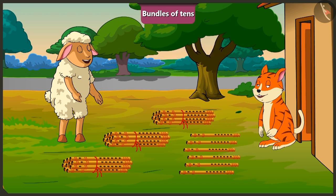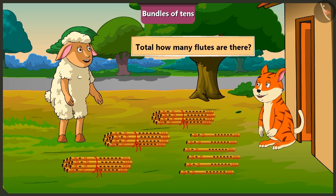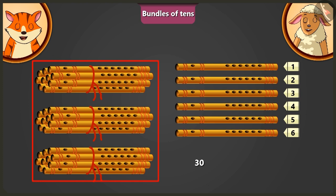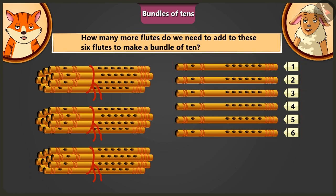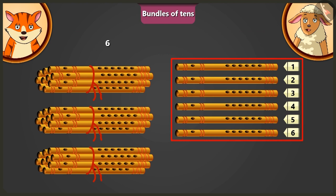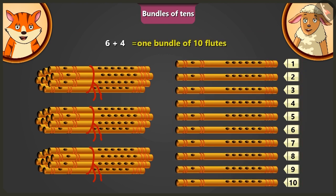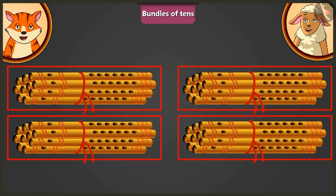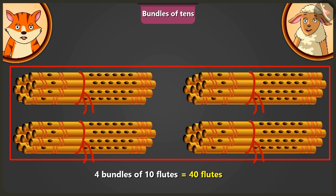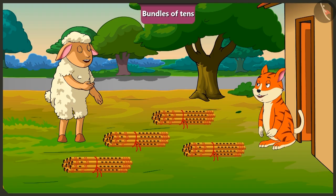Billy, now tell me how many flutes are there in all? There are 30 and 6 — total 36 flutes. Come, Lily, now tell me: adding how many flutes to these 6 flutes will make 1 bundle of 10? Adding 4 flutes to 6 flutes will make 1 bundle of 10 flutes. Yes, now here we have 4 bundles of 10 flutes each, that means there are total 40 flutes. Well done, Billy. Okay, now I will leave. See you. Bye.